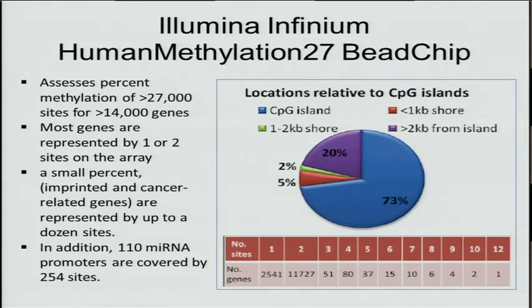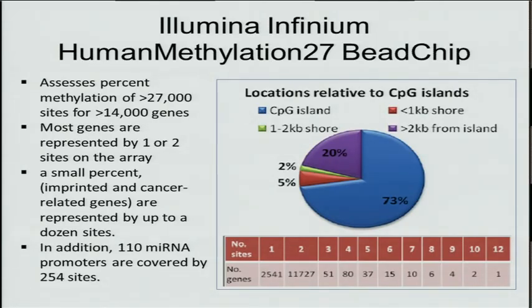All of the data we used was performed on the Illumina Human Methylation 27B chip. It assesses the percent methylation for over 27,000 sites for over 14,000 genes. Most genes are represented by one or two sites on the array, as you can see in the table on the lower left.